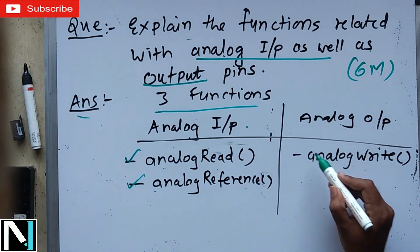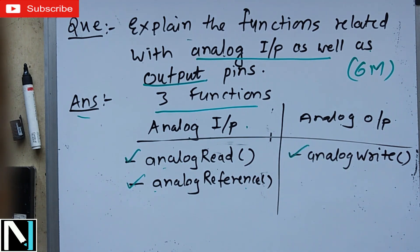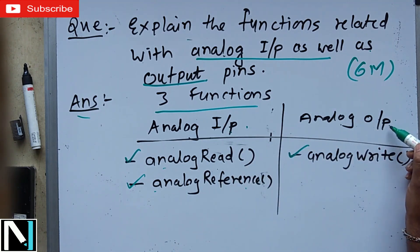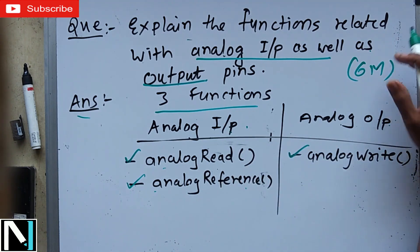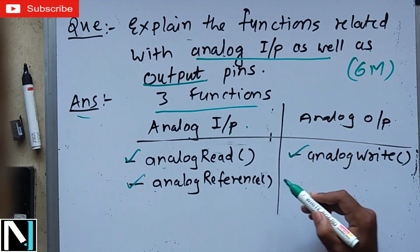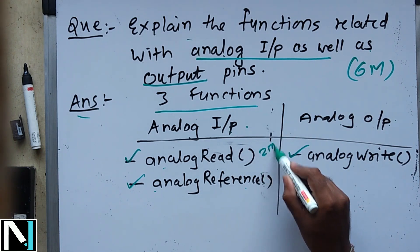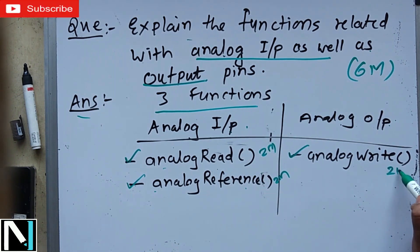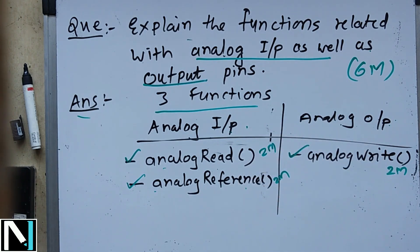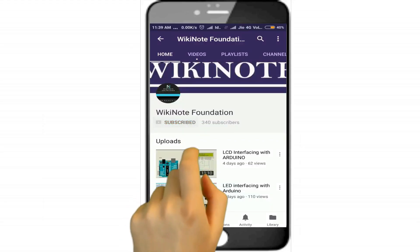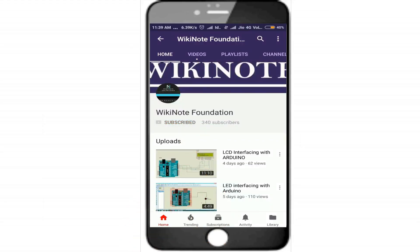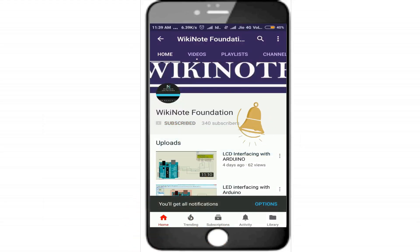Don't confuse between analog input and output functions. Since this carries six marks, each of the three functions will carry two marks. We are going to explain each function. Please do subscribe to the YouTube channel Wikinote Foundation and click the bell icon to receive notifications of newly uploaded videos.